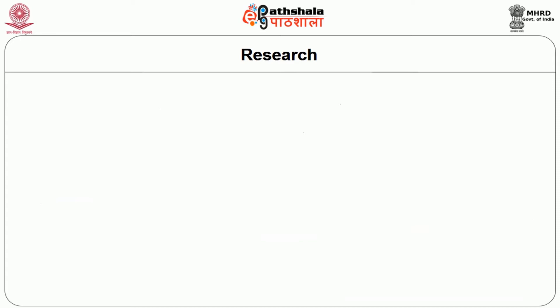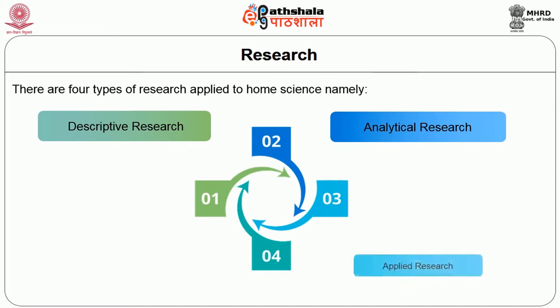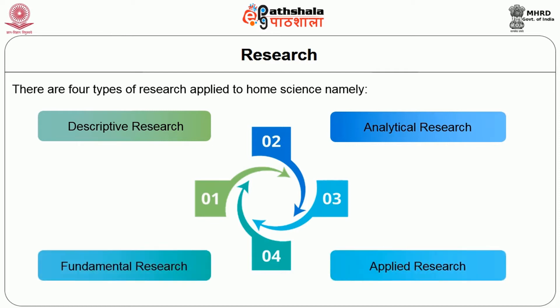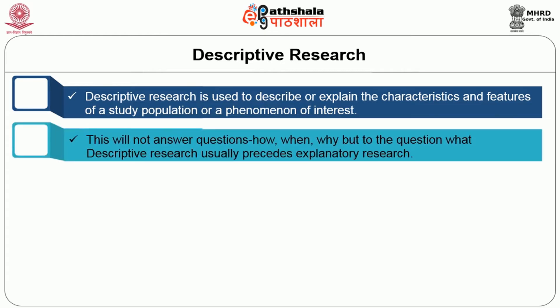We are now going to have the explanation of four types of research applied to home science: descriptive research, analytical research, applied research and fundamental research. Descriptive research is used to describe or explain the characteristics and features of a study population or a phenomenon of interest. This will not answer questions how, when, or why — but answers the question what.